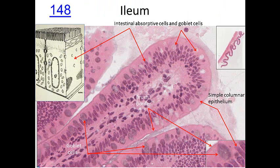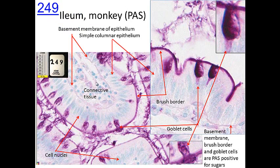Looking at the intestinal absorptive cells, there's not much space between adjacent ones. That's characteristic of epithelium: there are tight junctions between adjacent cells, elaborate junctions between cells, and as a consequence not much extracellular space. You can see the brush border right there and the nuclei of these cells. With PAS staining of intestinal tissue, not only does the basement membrane stain, but the brush border stains as well, and the goblet cell secretions stain too.